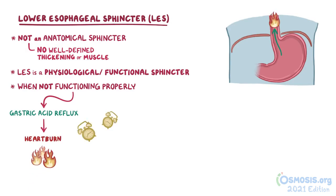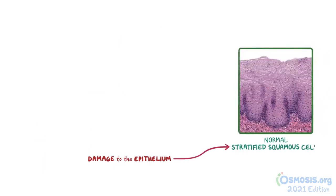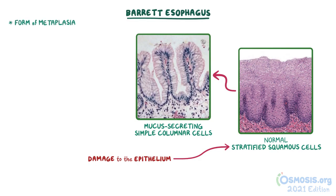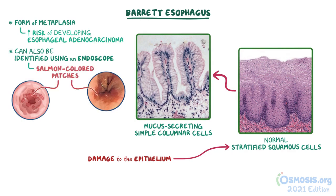Also, over time, prolonged exposure to gastric acid can cause damage to the epithelium of the esophagus. The body attempts to adapt by transforming the normal stratified squamous cells of the lower esophageal lining into a mucous-secreting epithelium with simple columnar cells, which are better at protecting themselves from the gastric acid. This condition is called Barrett esophagus, which is a form of metaplasia. Unfortunately, this metaplastic change also increases the risk of developing an esophageal adenocarcinoma. These changes can also be identified by using an endoscope, where we'd see salmon-colored patches at the lower segment of the esophagus. The presence of both endoscopic and histologic changes are needed for the diagnosis of Barrett esophagus.